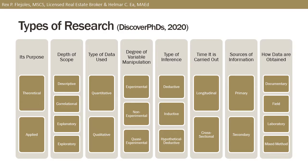Another classification is from the blog posted by Discover PhDs. The author clarifies types of research according to the following eight perspectives: its purpose, depth of scope, type of data used, degree of variable manipulation, type of inference, time it is carried out, sources of information, and how data are obtained. The first three perspectives are the same as those of Comar.